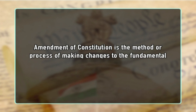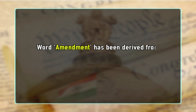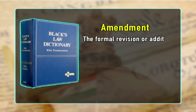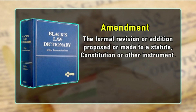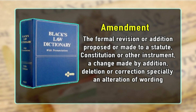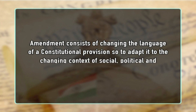Amendment of constitution is the method or process of making change to the fundamental law of the land, or the supreme law. The word amendment has been derived from a Latin term 'amendare', which means to make right, to correct or to rectify. In Black's Law Dictionary, the word amendment has been defined as the formal revision or addition proposed or made to a statute, constitution or other instrument — a change made by addition, deletion or correction, especially an alteration of wording. Amendment is thus a process to mold or alter the provisions of the constitution, and practically every constitution has some method of formal constitutional amendment.